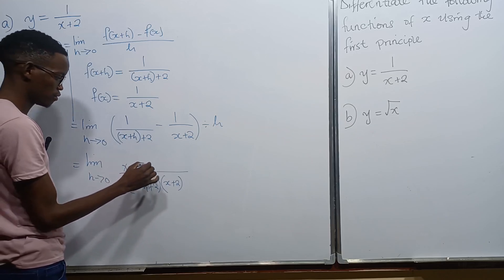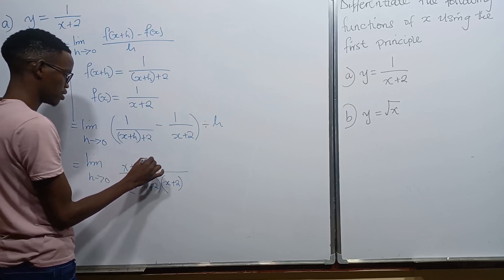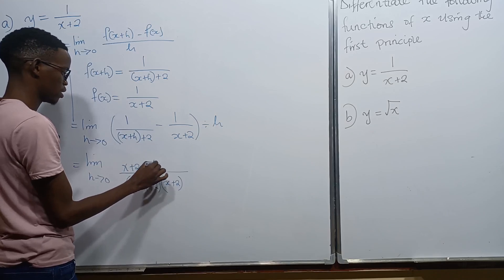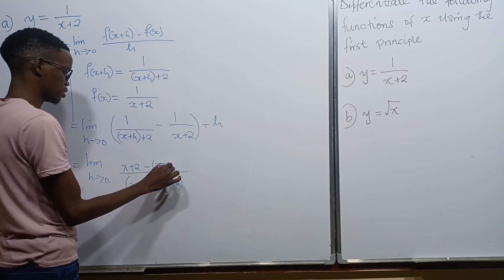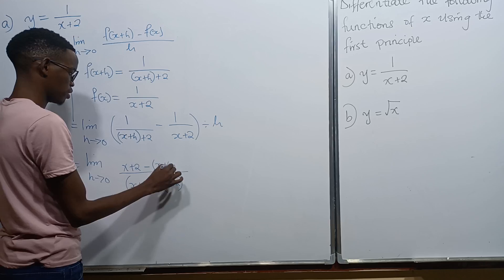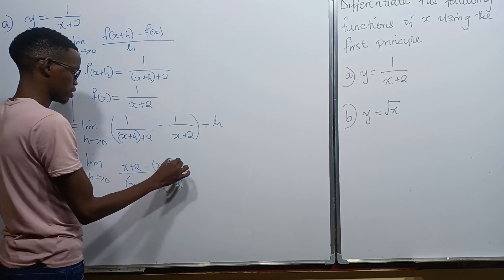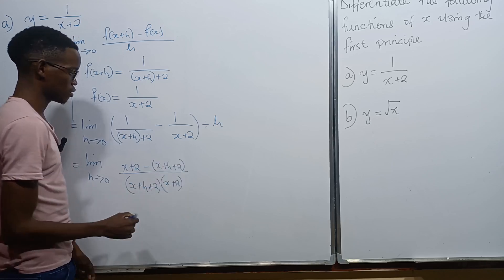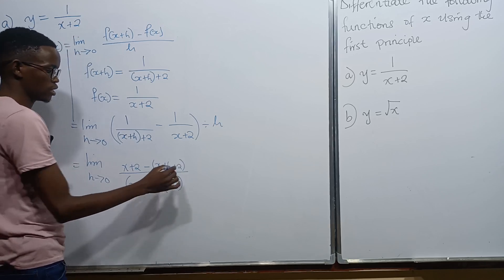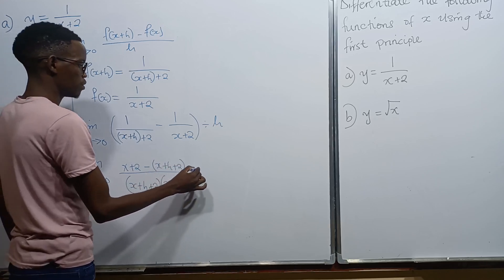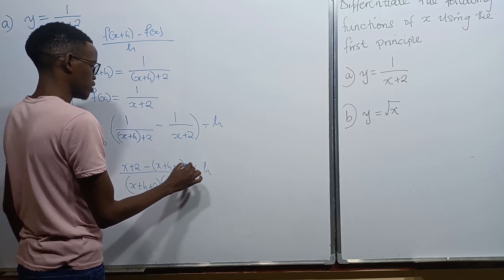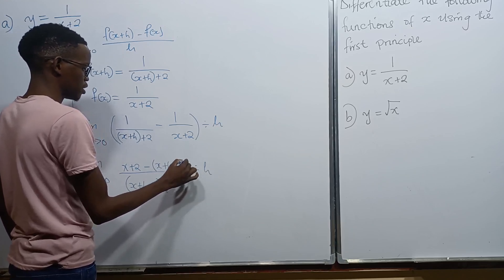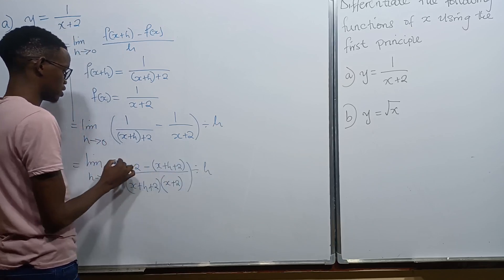So on the numerator we're going to have x plus 2, minus x plus h plus 2. We don't forget that everything here is being divided by h.